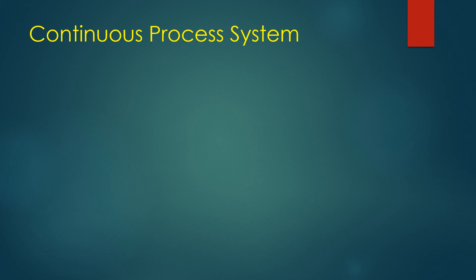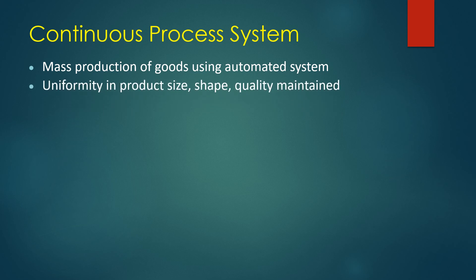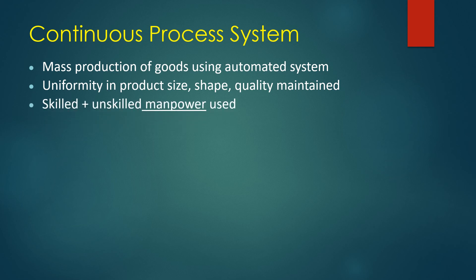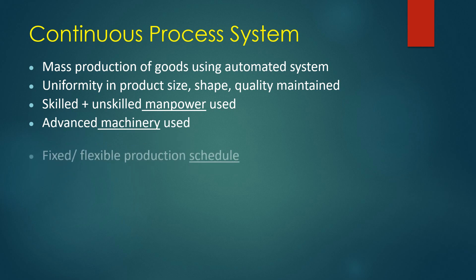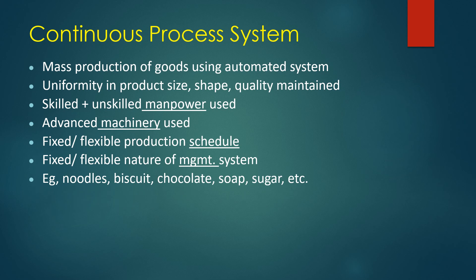Under the continuous process system, mass production of goods is done using an automatic system. There is uniformity in product size, shape, and quality. Skilled as well as unskilled manpower is used, and advanced machinery is used. It has a flexible as well as fixed production schedule and fixed and flexible nature of management system. Examples include production of noodles, biscuits, chocolate, soap, and sugar.